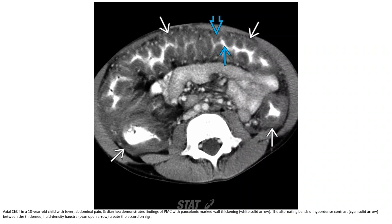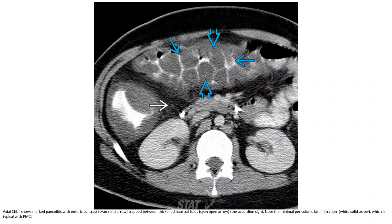Contrast CT in a 10-year-old child with fever, abdominal pain, and diarrhea shows findings of pseudomembranous colitis with pancolonic marked wall thickening. The alternating bands of hyperdense contrast between the thickening folds create the accordion sign. Note the minimal pericolonic fat infiltration, which is typical of pseudomembranous colitis.